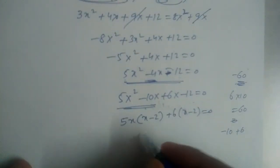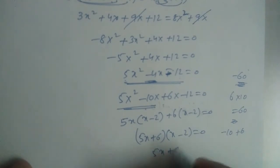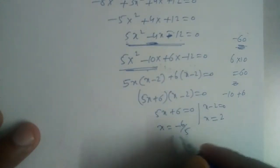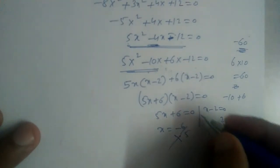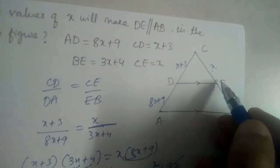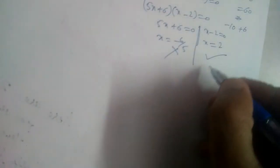Factorizing: 5x(x − 2) + 6(x − 2) = 0, giving (5x + 6)(x − 2) = 0. So either 5x + 6 = 0, giving x = −6/5, or x − 2 = 0, giving x = 2. Since CE equals x and a side length cannot be negative, we reject x = −6/5. Therefore x = 2 is the correct answer.